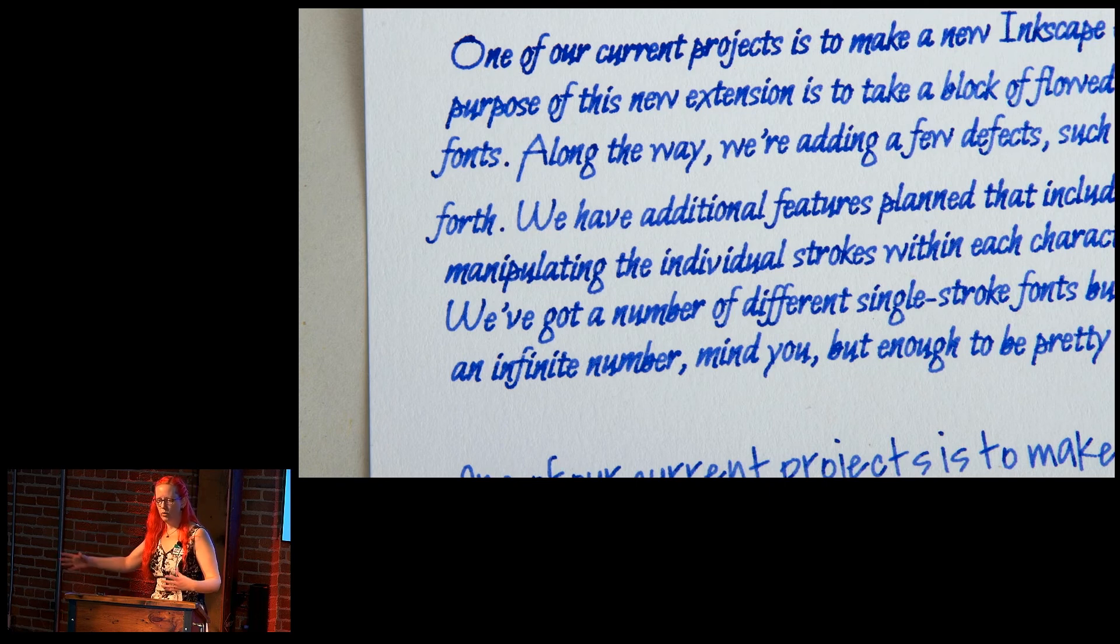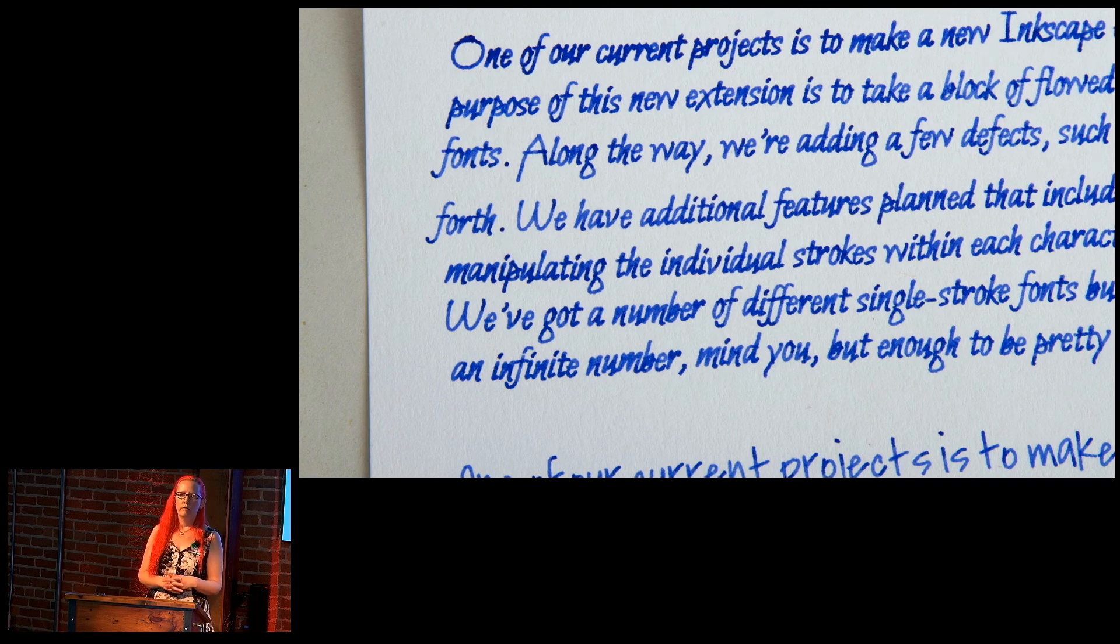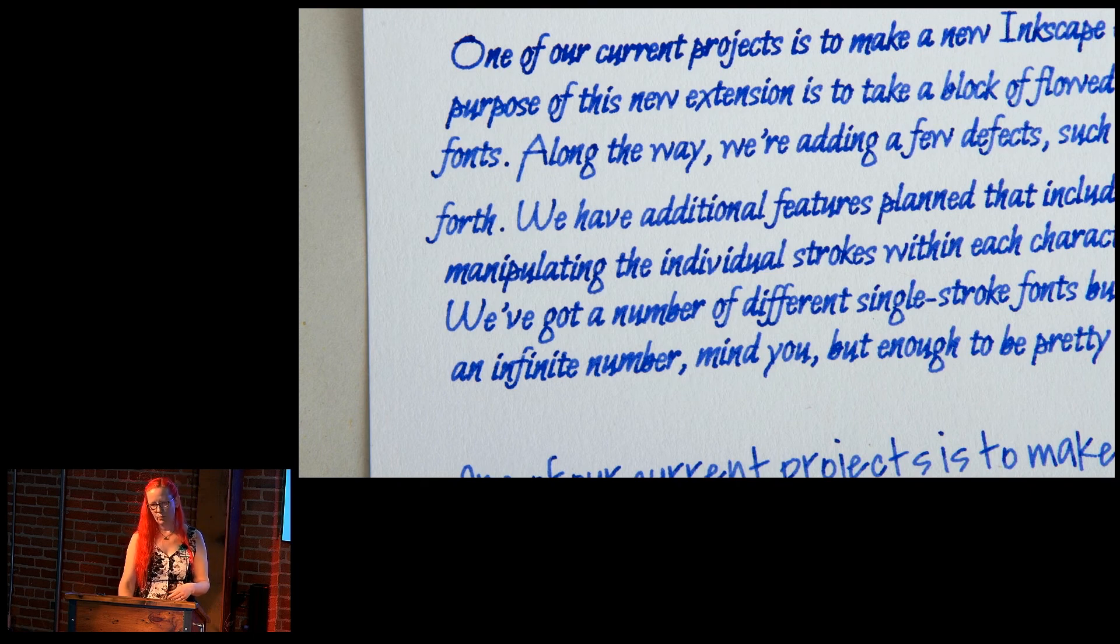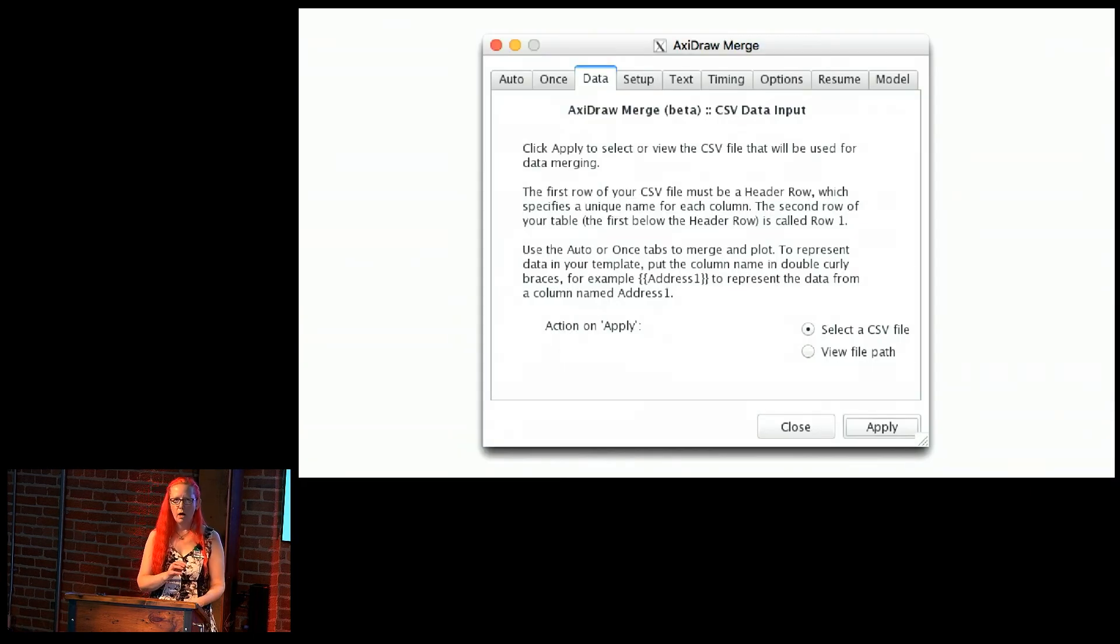Some of the things that we're doing toward the future are building on Hershey text. We're making a Hershey advanced that can add some irregularity to the text. Make it look less machine-like. Add variation in things like baseline and letter spacing. Possibly make it look more human. We're working on an AxiDraw merge extension. One of our largest user bases is actually real estate agents. And they want to draw addresses on envelopes. But they still want it to look like it was handwritten, so it needs to be stroke text.